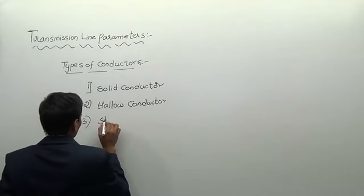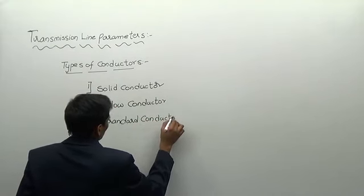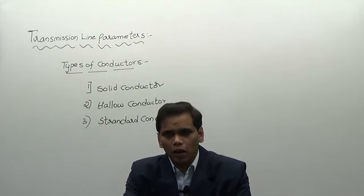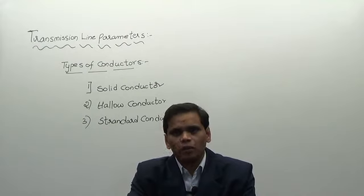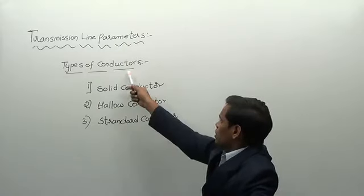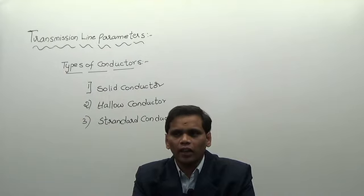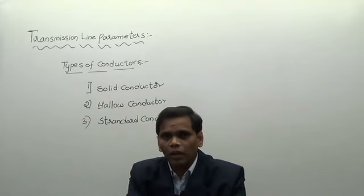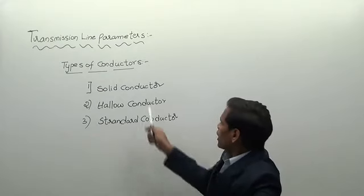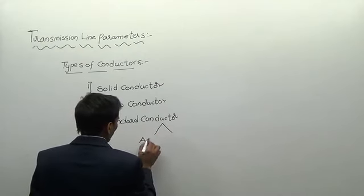These conductors are used not only in transmission lines but also in bus bars, current transformers, potential transformers, isolators, and circuit breaker poles. Out of these three types — solid conductor, hollow conductor, and stranded conductor — stranded conductors are further of two types: one is the ACSR conductor and another is the expanded ACSR conductor.